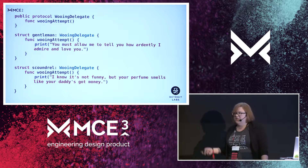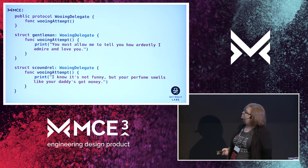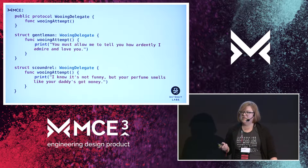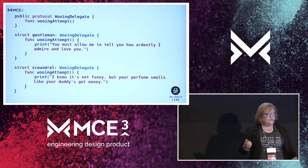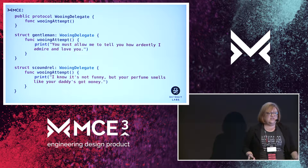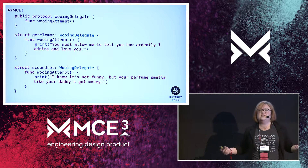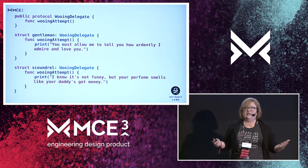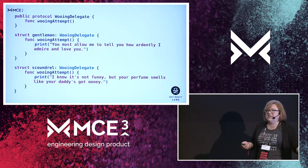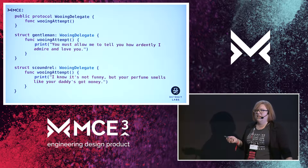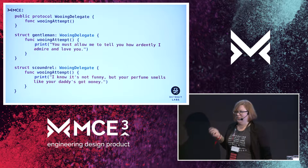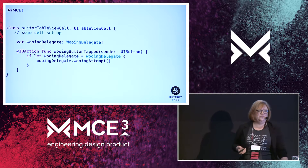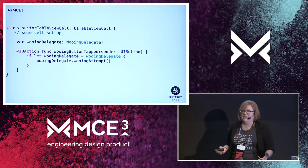For example, let's say you've got some suitors — some gentlemen and some scoundrels — and they're going courting. Both of them conform to the wooing delegate, which means they both promise to have a method called a wooing attempt. But as you can see, how they enact those two things are incredibly different. This is a cute example, but why does that matter?